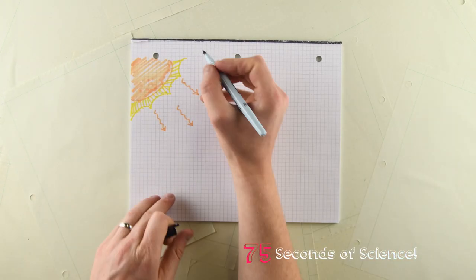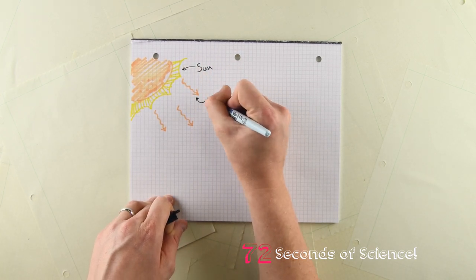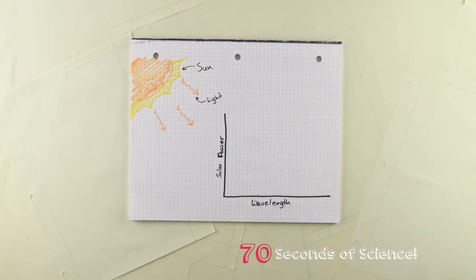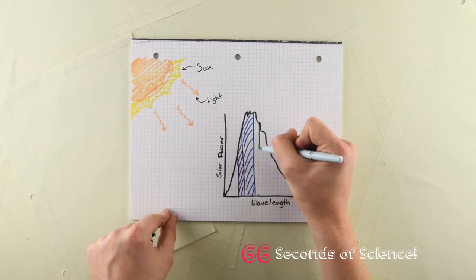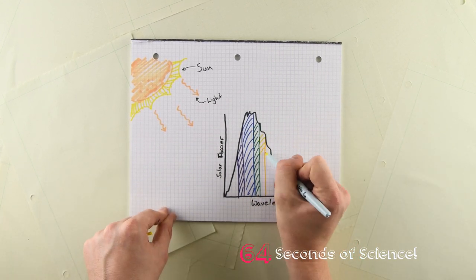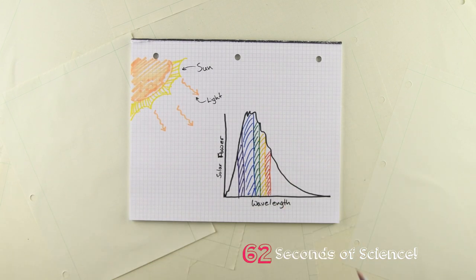The first thing we need to know is that light is a form of radiation, and the sun emits a lot more radiation than just visible light. We can characterize the different forms of radiation by their wavelength, or how much photons, the particles that make up light, wiggle as they travel through space.